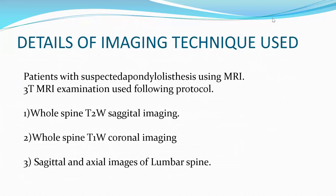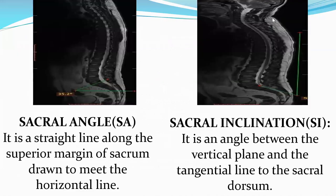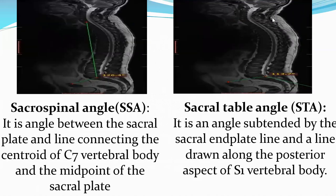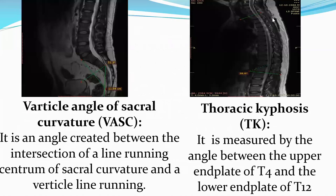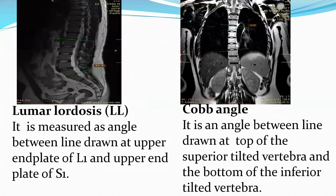Imaging technique: patients with suspected spondylolisthesis were evaluated using a 3 Tesla MRI with the following protocol: whole spine T2-weighted sagittal imaging, whole spine T1-weighted coronal imaging, and sagittal and axial images of the lumbar spine. Parameters measured included sagittal vertical axis, sacral angle, sacral inclination, sacrospinal angle, sacral table angle, vertical angle of the sacral curvature, thoracic kyphosis, coronal imbalance, sacral slope, lumbar lordosis, and Cobb angle. The Cobb angle is defined as the angle between a line drawn at the top of the superior tilted vertebra and the bottom of the inferior tilted vertebra.